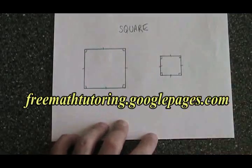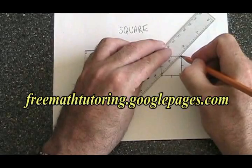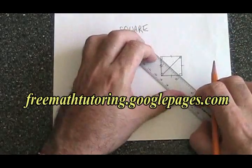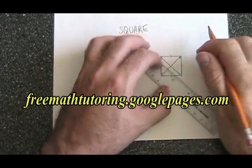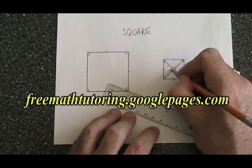The diagonals of a square cross each other at right angles. So therefore these four angles are all also 360 degrees.